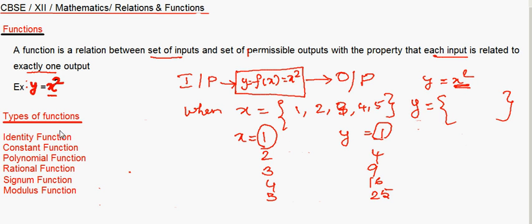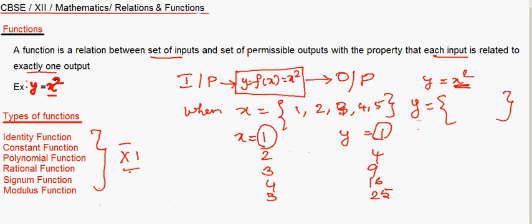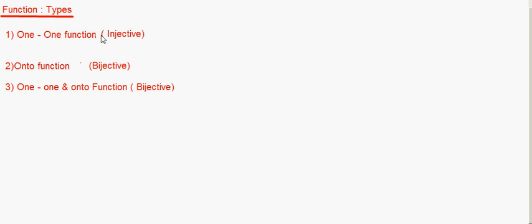These are the different types of functions: identity, constant, polynomial, rational, signum, and modulus. I hope you have already studied these in Class 11, so I will not take much time explaining them. You should know what these different types of functions are. Now let's move on to the types of functions based on mapping.